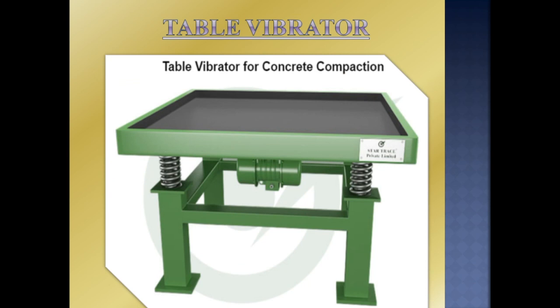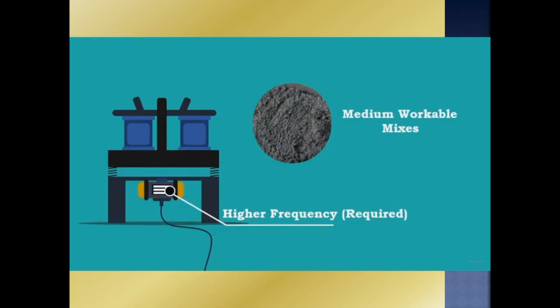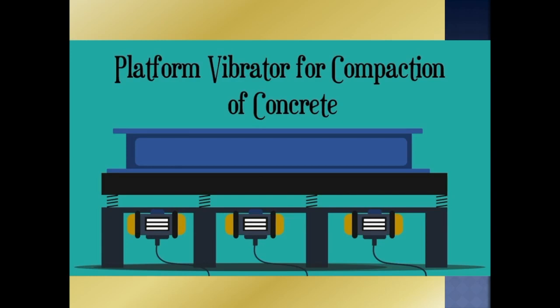In the formwork table, we use maximum laboratory and prefabricated units. We use thin sections of slab and compact table. The basic principle is that this is an external vibrator. The frequency of vibration for the formwork vibrator is less than 6,000 maximum. For a stiff mix in compacted situations, we can change to a high frequency vibrator.